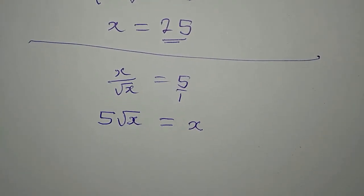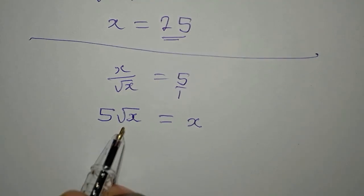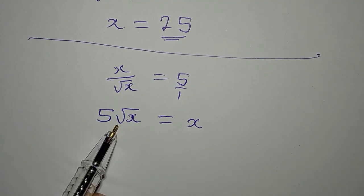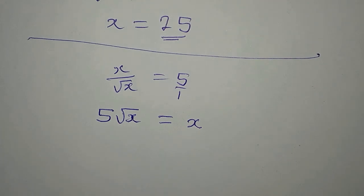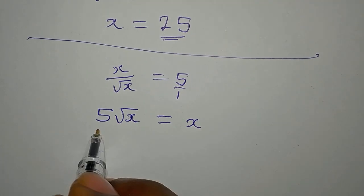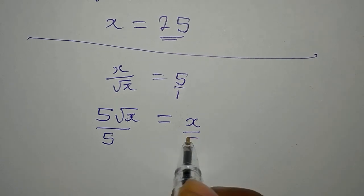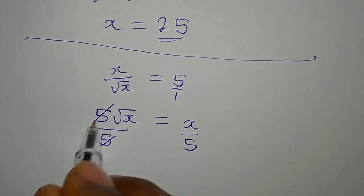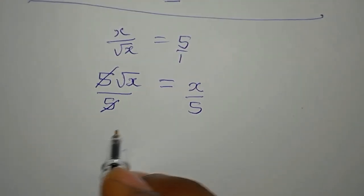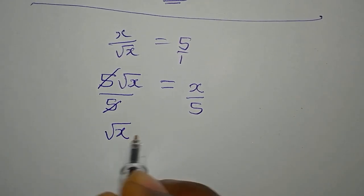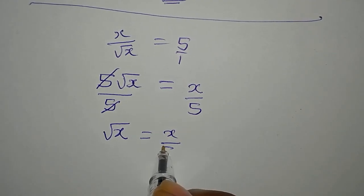Now, the next thing is to square both sides because of this. Or by the way, you can decide to divide both sides by 5. And this is gone. Now, square root of x is equal to x over 5.